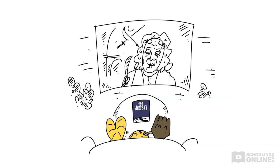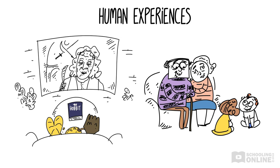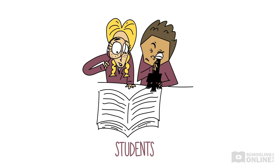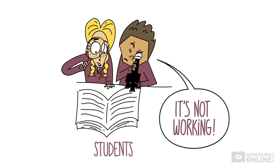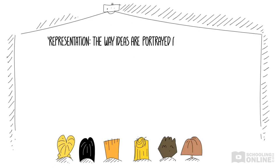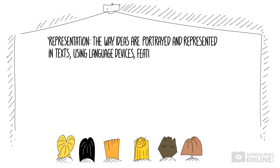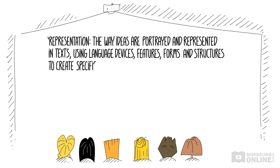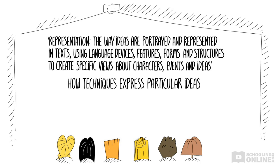As you analyse your texts, never forget that storytelling is a very important way that people make sense of their experiences as humans. Now that we've discussed storytelling from such a wide perspective, it's time to zoom in and analyse your texts up close. In this module, we have to think critically about representation. The syllabus defines representation as the way ideas are portrayed and represented in texts, using language devices, features, forms and structures to create specific views about characters, events and ideas. You need to identify how techniques express particular ideas — in other words, what a text is saying and how it's being said.